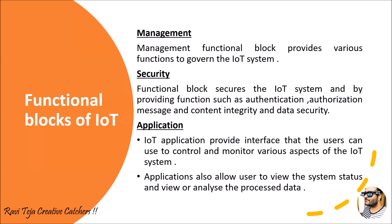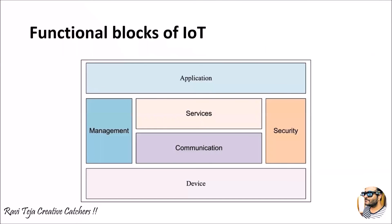The user can have complete access — they can monitor, control, manipulate, or analyze the processed data, and see all the sensor data captured over time. Almost all the functional blocks are interlinked and interconnected, and play an important role with respect to the Internet of Things. Management, security, services, communication, device, as well as application — all these functional blocks play an important role. Thank you.